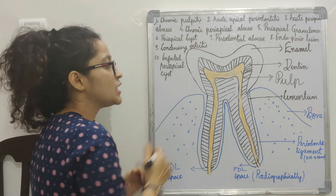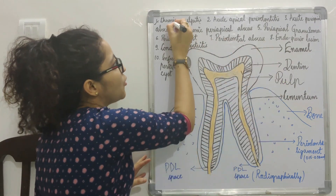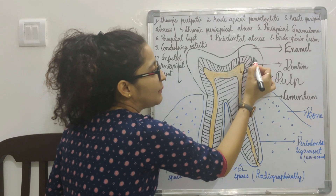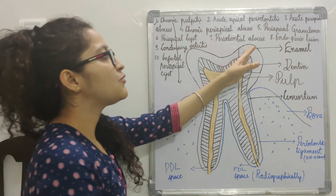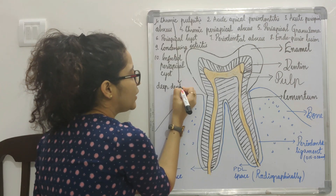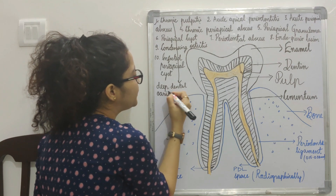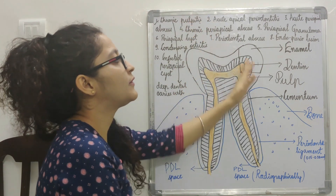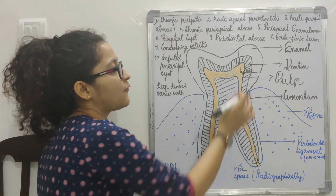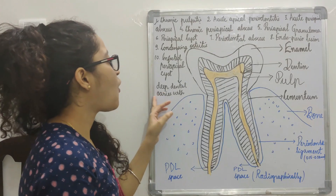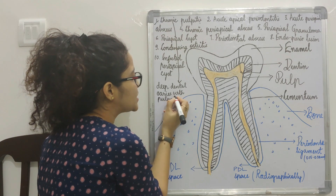When you take an x-ray in chronic pulpitis, you will see a deep dental caries involving enamel, dentine, and pulp. So you can write: diffuse radiolucency involving enamel, dentine, and pulp, suggestive of deep dental caries with pulpal involvement. You are not going to use the word 'chronic pulpitis' because pulpitis is inflammation, and we cannot see inflammation on a radiograph.